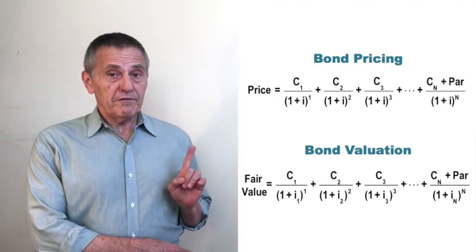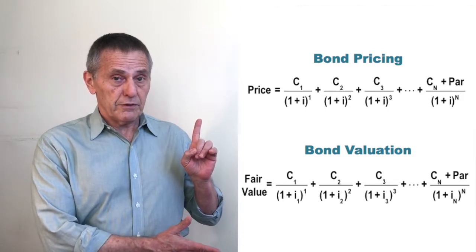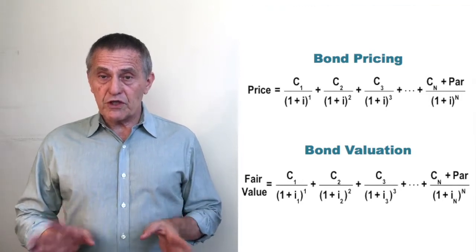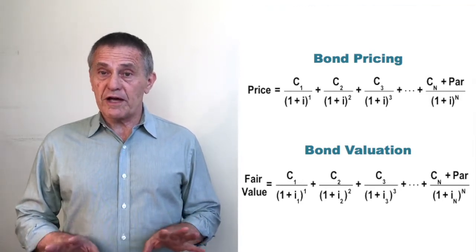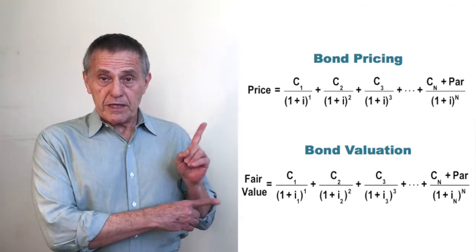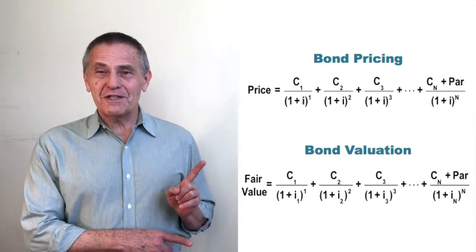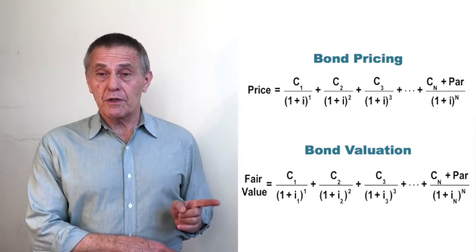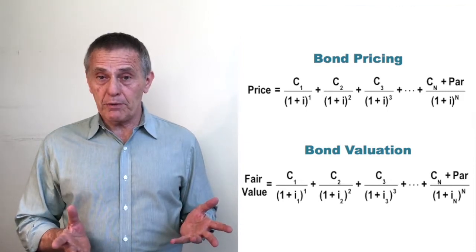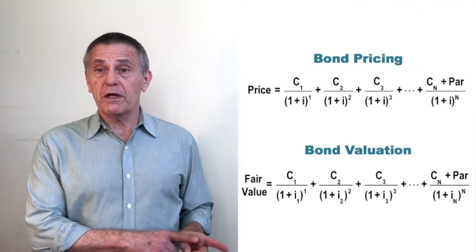But quantities on the left-hand sides are now different, price being the left-hand side of the top equation, fair value being the left-hand side of the lower equation. Even the denominators look somewhat similar. In each case the divisors are 1 plus i raised to the same powers, and that's because we're discounting the same contractual cash flows over the same time periods. However, there is a distinct difference in the denominators of the two equations.